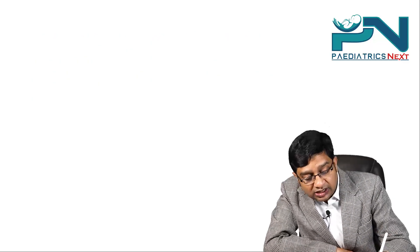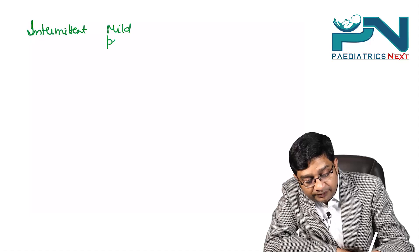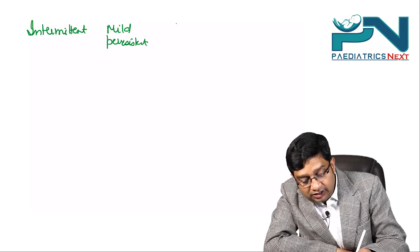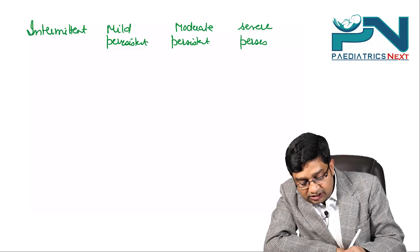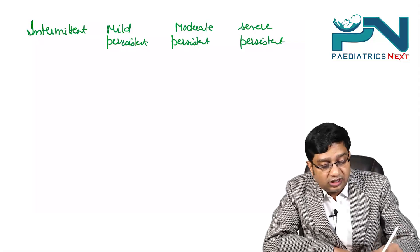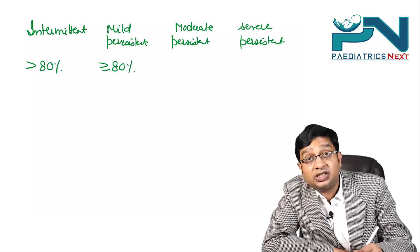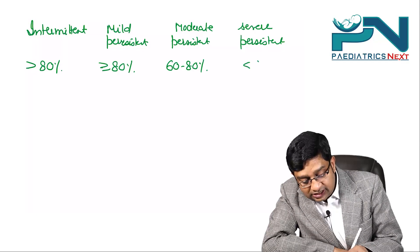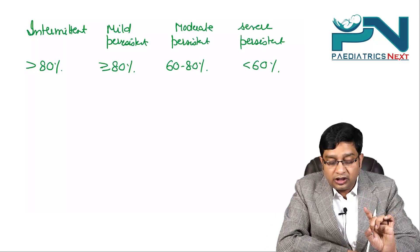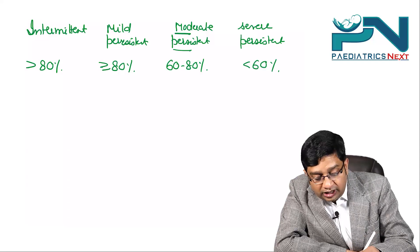Considering the asthma classification: intermittent asthma, mild persistent asthma, moderate persistent asthma, and severe persistent asthma. FEV1 greater than 80% corresponds to intermittent; greater than or equal to 80% for mild persistent; 60–80% for moderate persistent; and less than 60% for severe persistent. Taking the FEV1 criterion of 60%, we are talking about moderate persistent asthma.